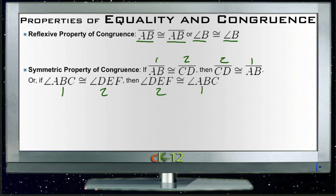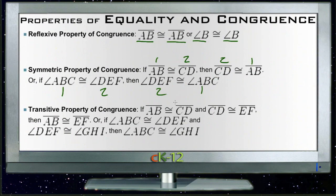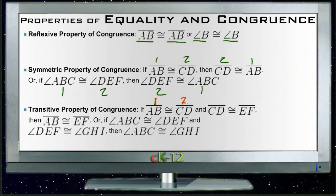The transitive property of congruence says that if line AB is exactly the same as line CD, and CD is the same as EF, then AB must be the same as EF. It's that same idea about ages: if 1 is the same as 2 and 2 is the same as 3, then 1 is the same as 3. It works the same way with angles.